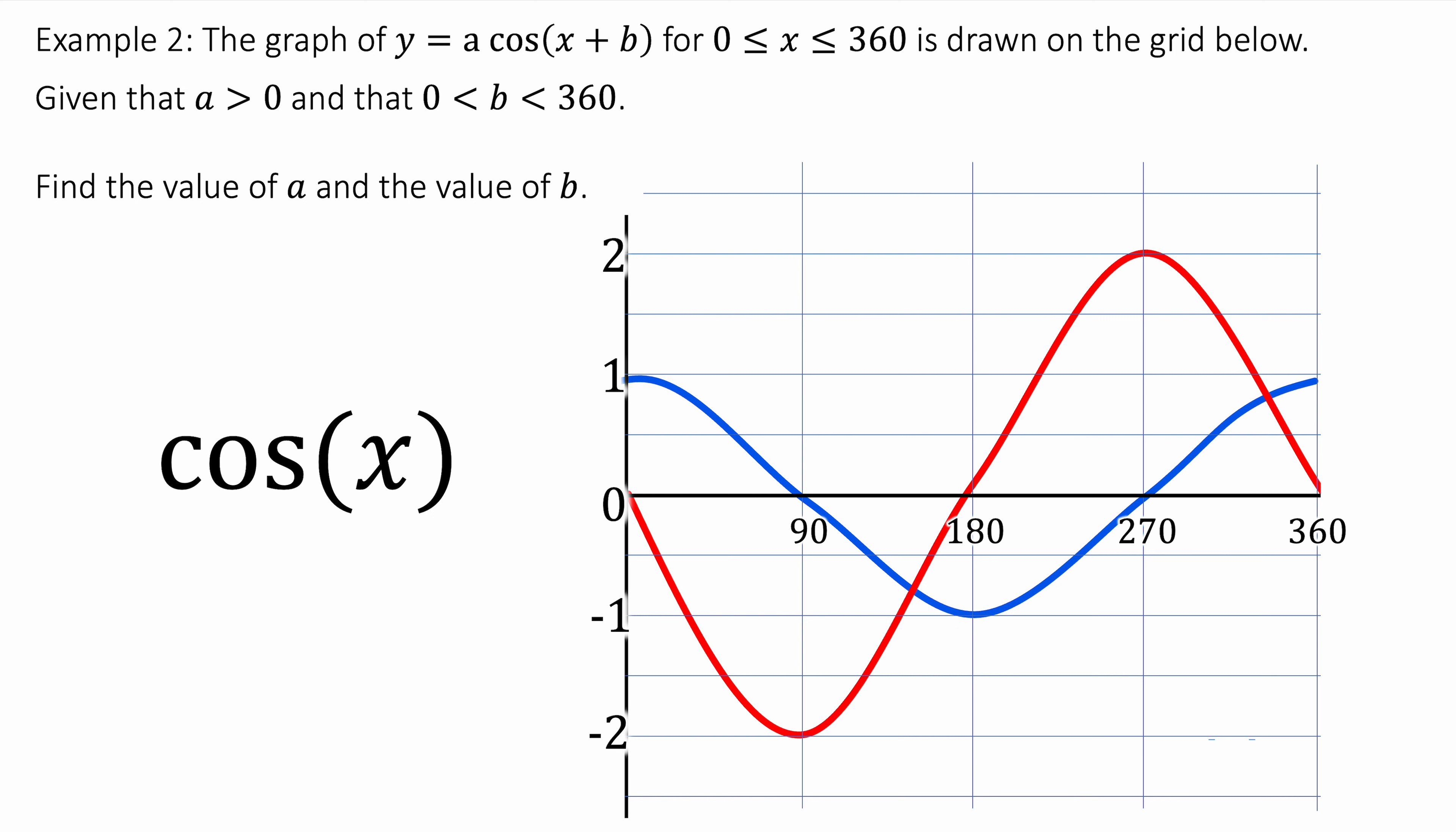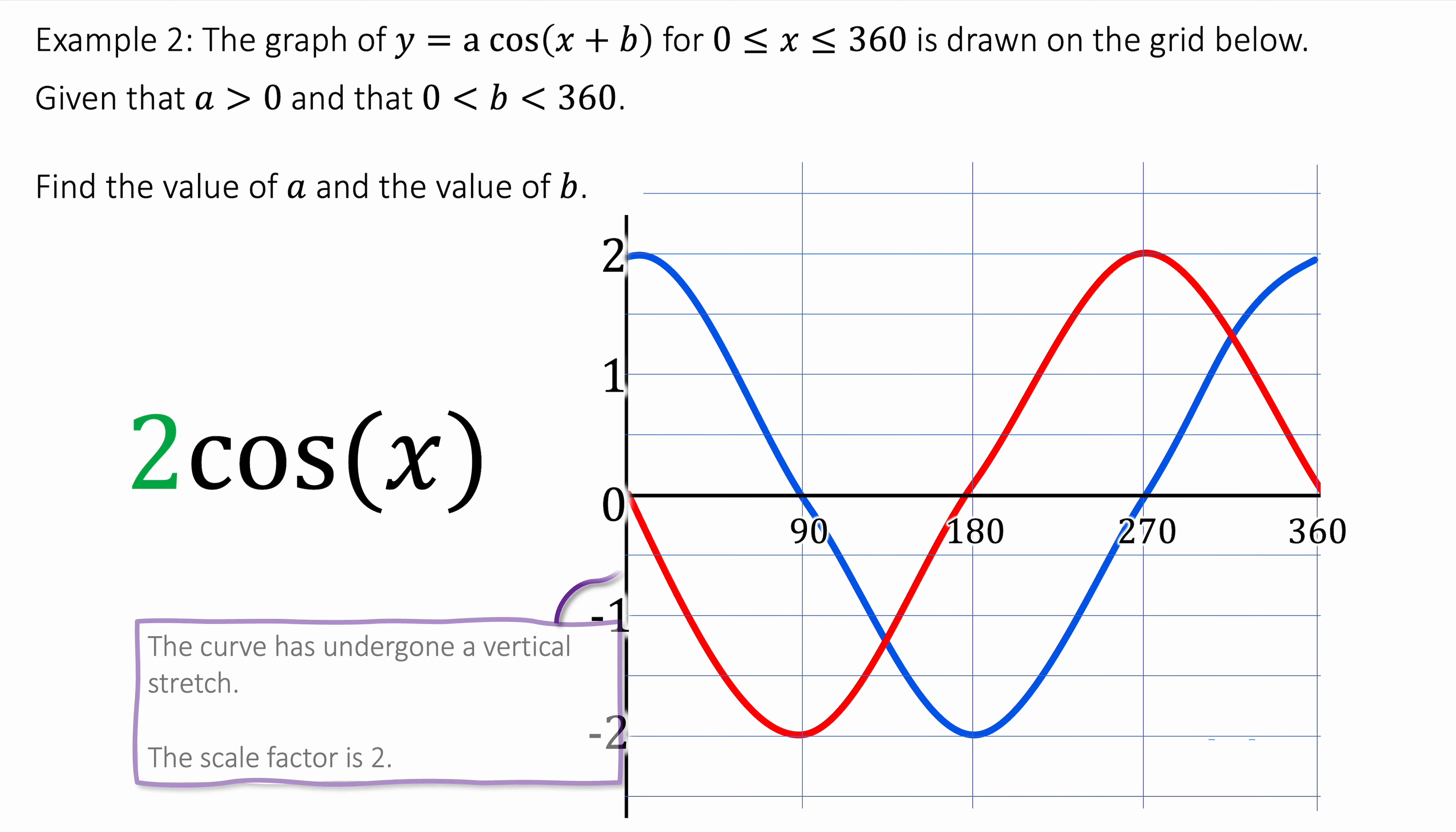Here I've drawn the original cos graph. I'm going to see how we can transform this blue line to make the red line. The first thing I'm going to do is multiply everything by 2. Because I want the red line to go from minus 2 to 2. So it's going to be twice as tall.